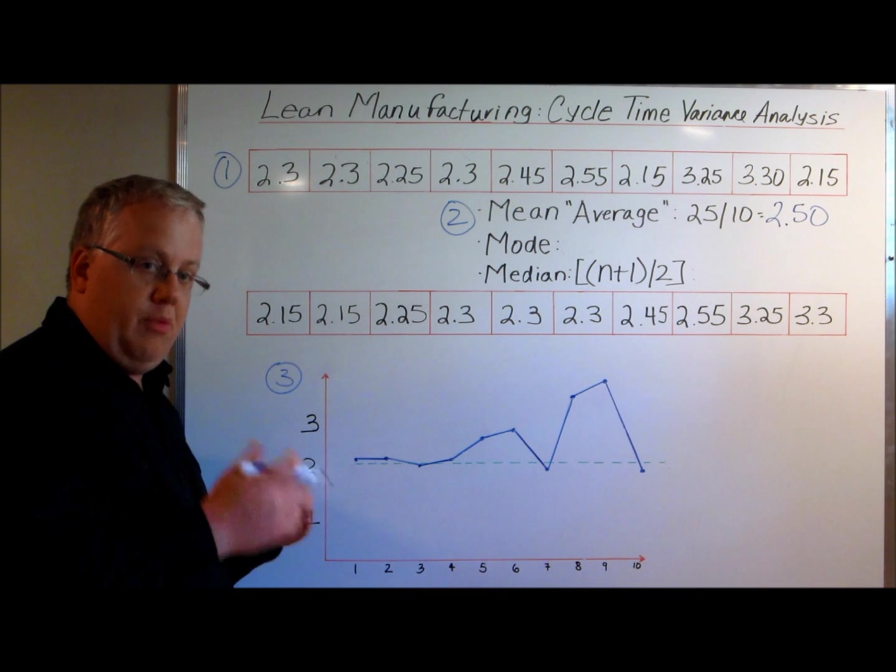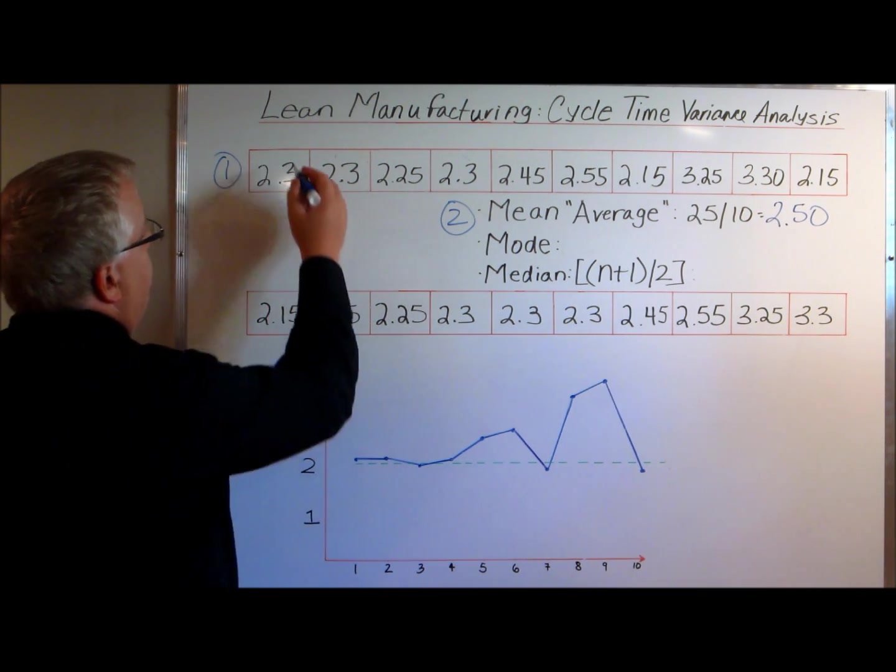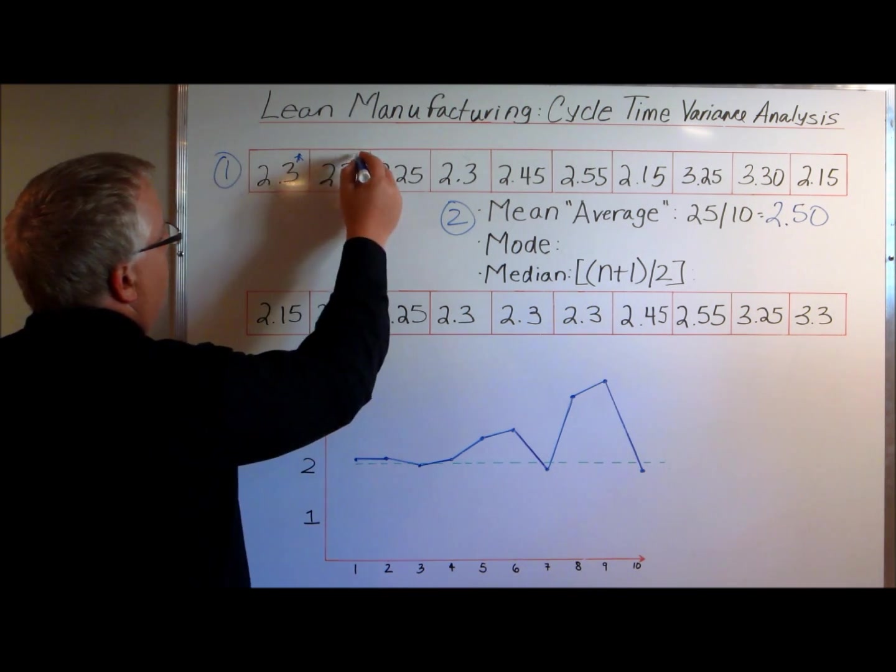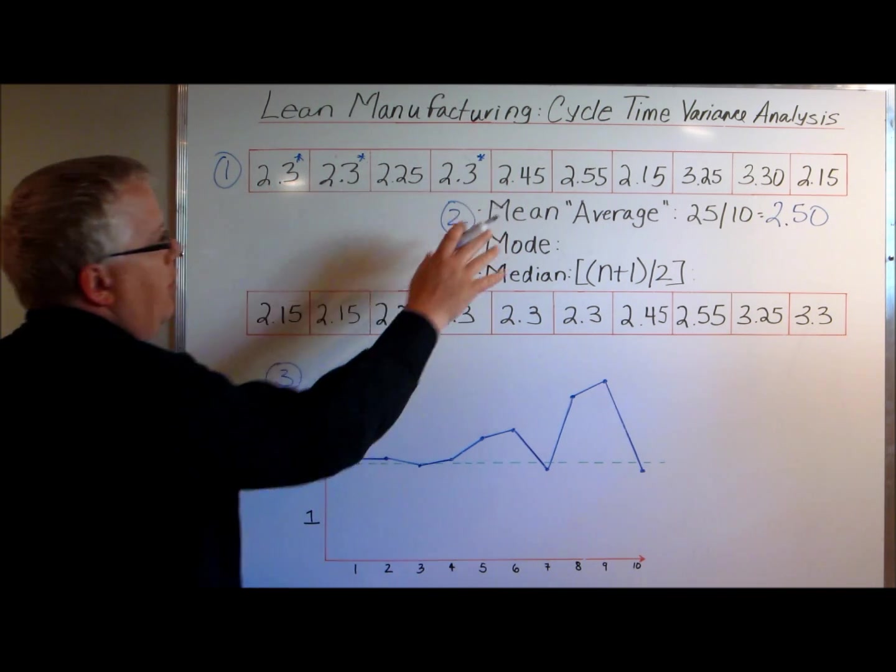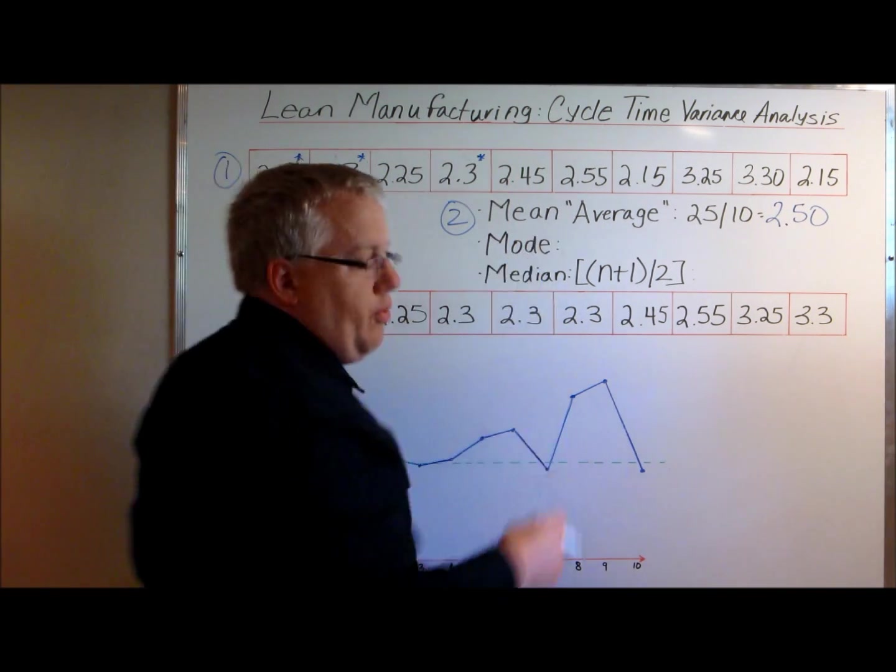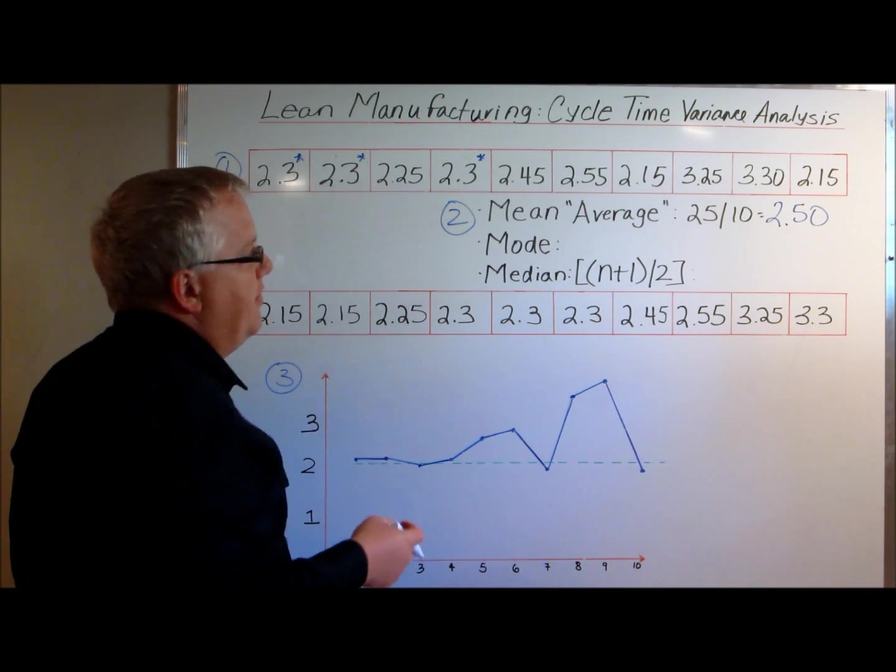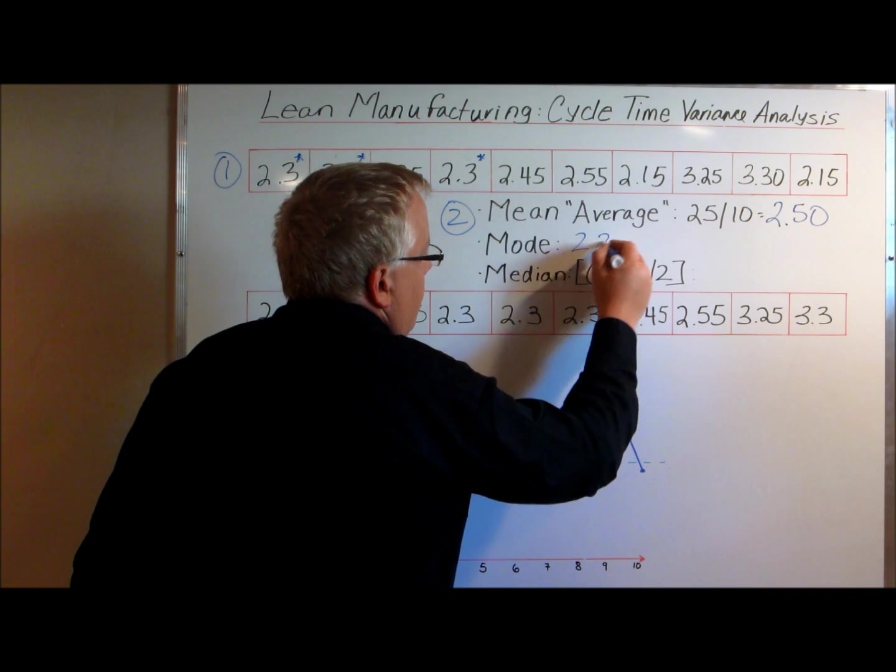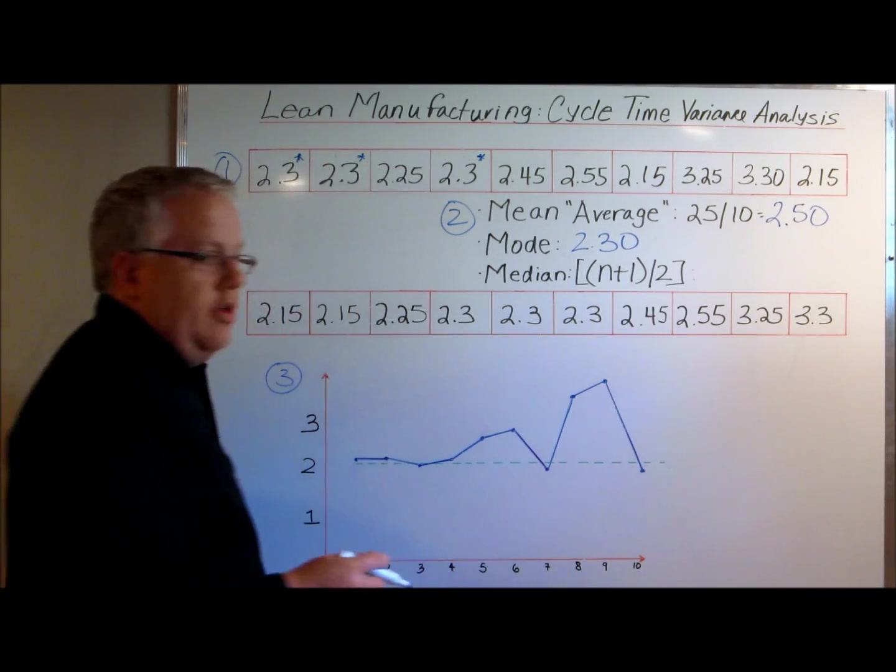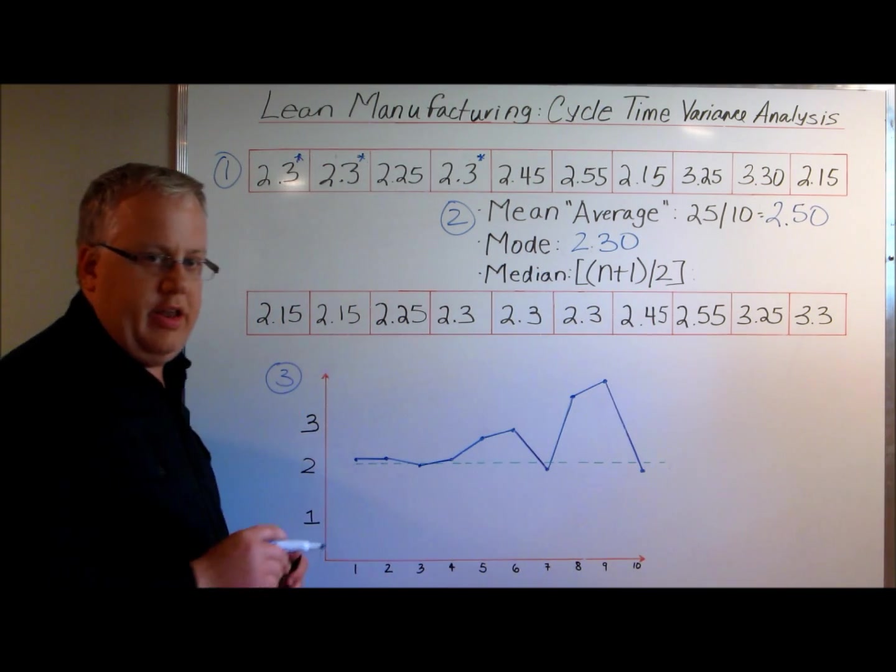The mode cycle time, or the mode in terms of average, is the number that appears most often in the sequence. So 2.3, 2.3, and 2.3—no other number other than maybe 2:15 appears more. The mode time is 2 minutes and 30 seconds. That's another way of calculating average.